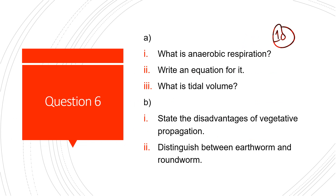Question 6: What is anaerobic respiration? Write an equation for it. What is tidal volume? State the disadvantages of vegetative propagation, and distinguish between earthworm and roundworm.